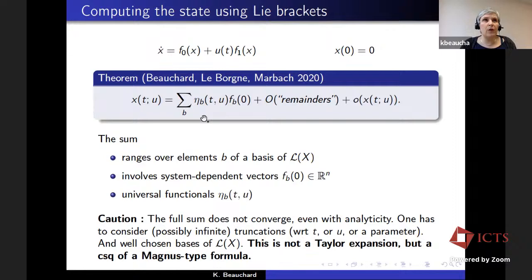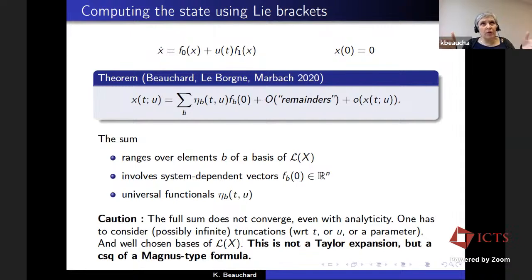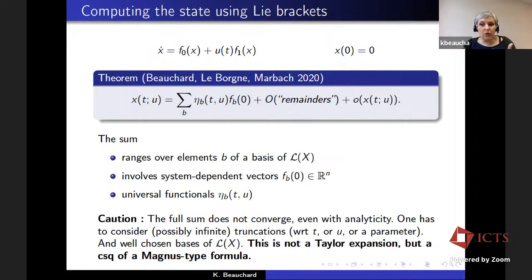The important fact about this formula is that it is not at all a Taylor expansion. If you take the Taylor expansion of X with respect to the control U, you get a formula which is not naturally expressed on the Lie brackets. This is why we derived this other representation formula. The difference is that here you have a small O of X, and inside this small O something is hidden corresponding to terms that were not Lie brackets in the Taylor formula. This formula is obtained as a consequence of the Magnus formula.